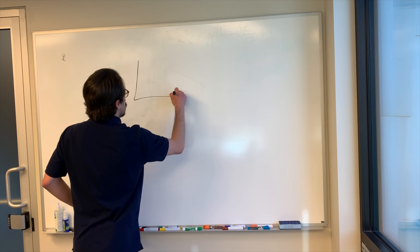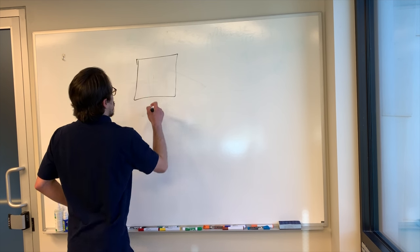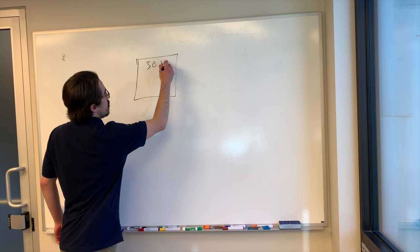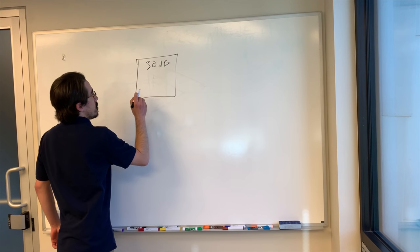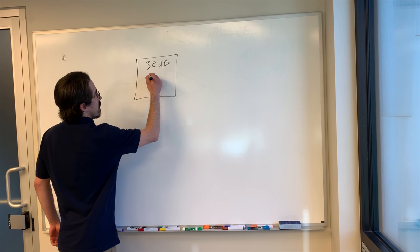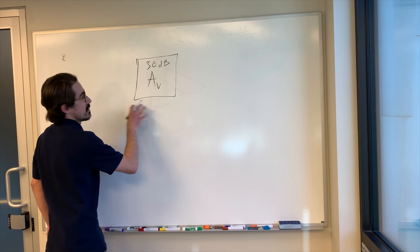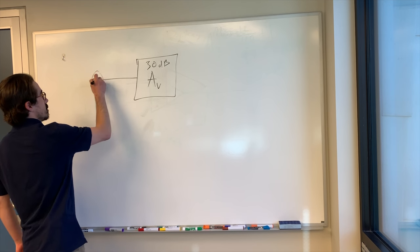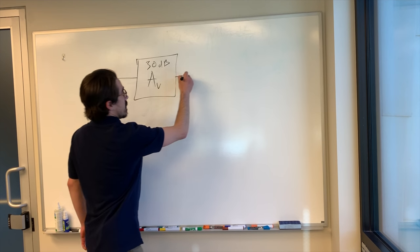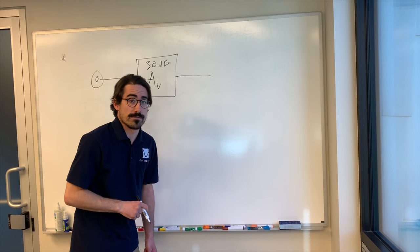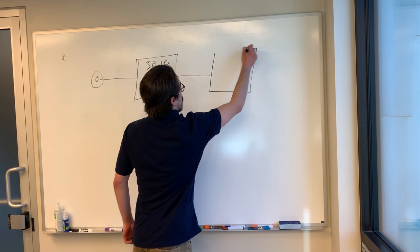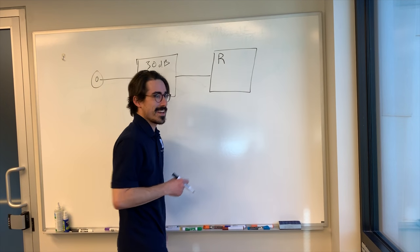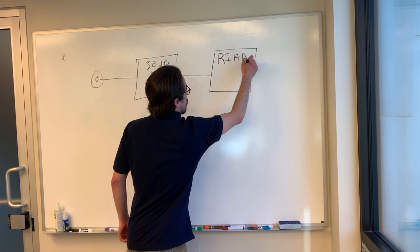So the first stage is going to be a 30 dB gain block. I'm going to call this Av, as in it's a straight gain block, and this is going to be the input. The next stage is going to be the EQ, which is called the RIAA curve.